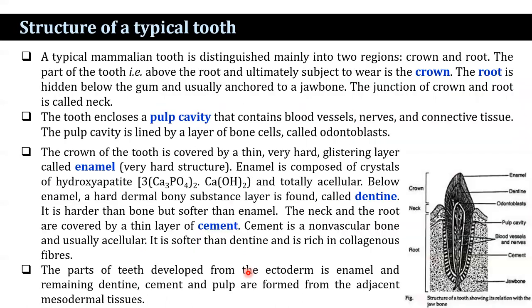What is the structure of a typical tooth? A typical mammalian tooth is distinguished mainly into two regions: the crown region and the root region. The part of the tooth that is above the root and ultimately subject to wear is known as the crown, and the root region is hidden below the gum and usually anchored to the jawbone.